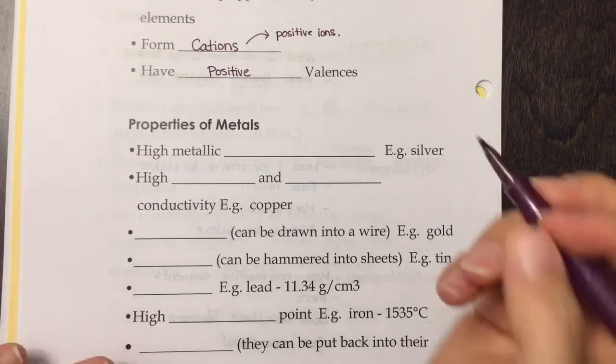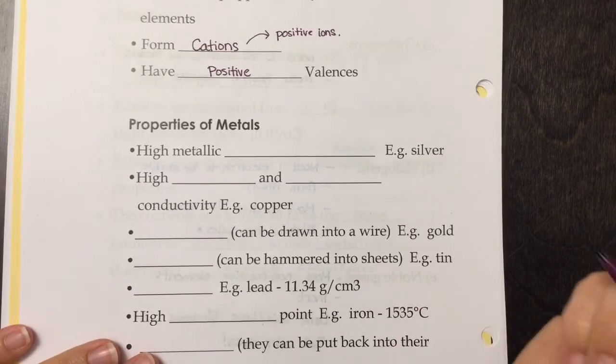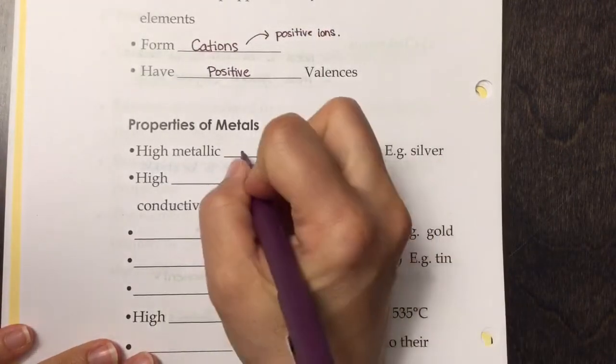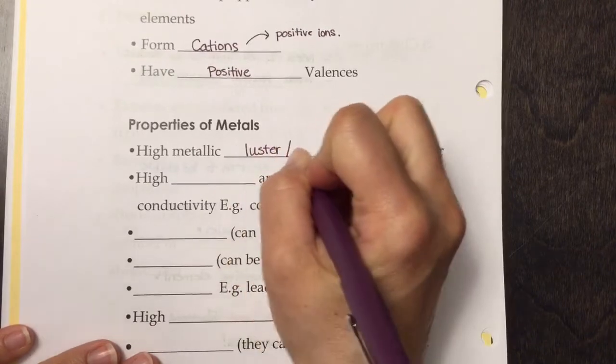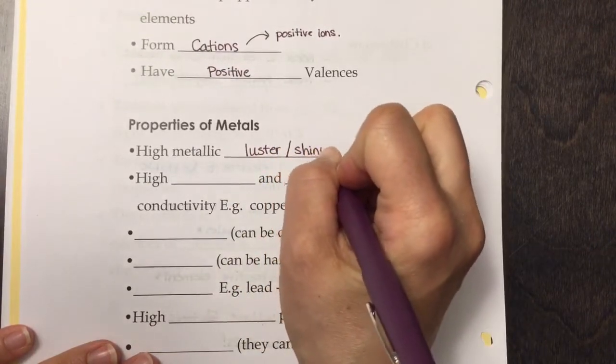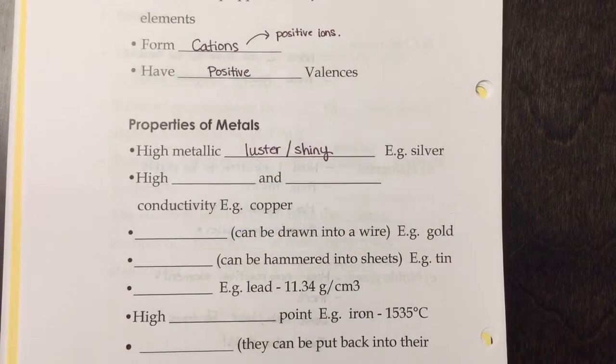Metal properties: they have a high metallic luster or shiny appearance, like silver. That's why we use them to make jewelry.